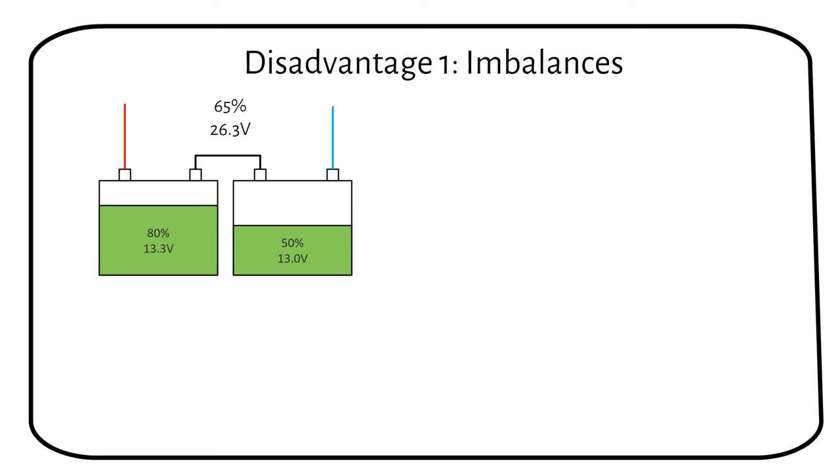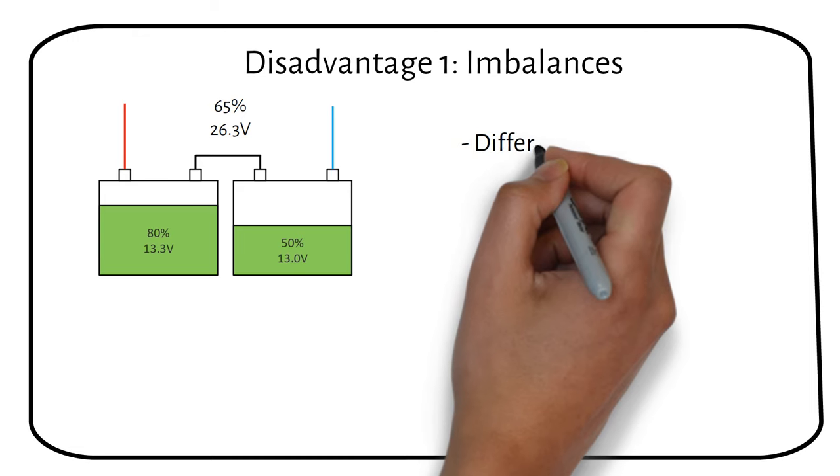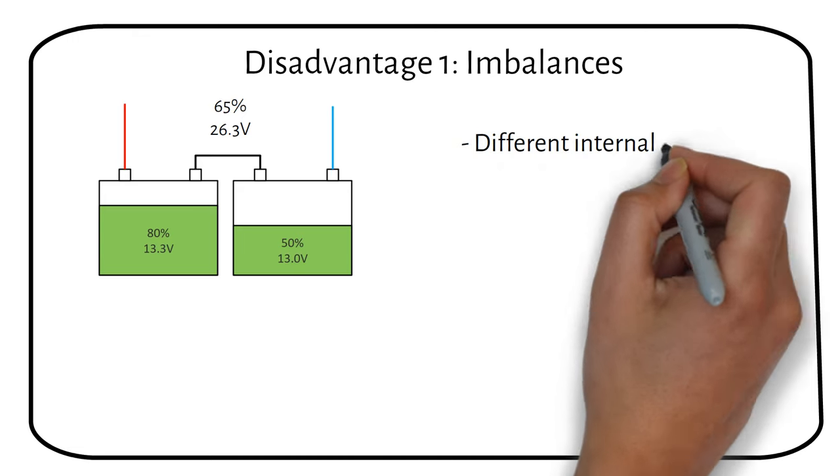Imbalance in batteries connected in series can come from variations in internal resistance or poor connections due to lugs or bus bars.